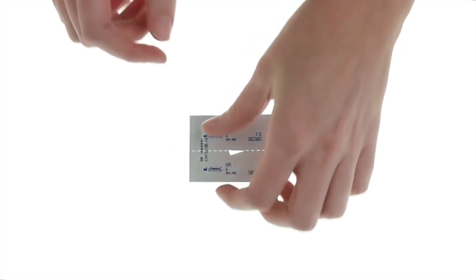To start, remove one single-use sensor from its packaging. Tear along the dotted line to separate one of the attached wrapped sensors.